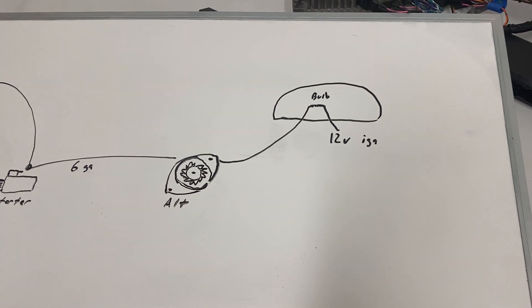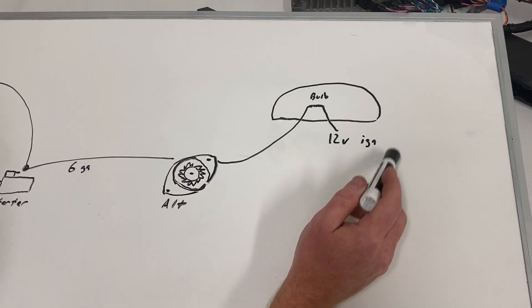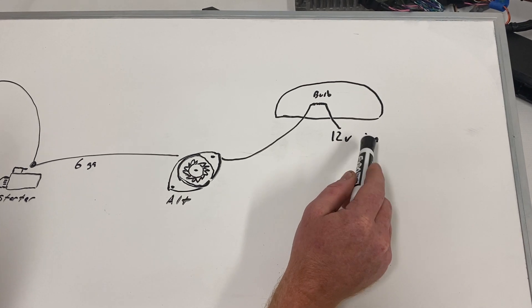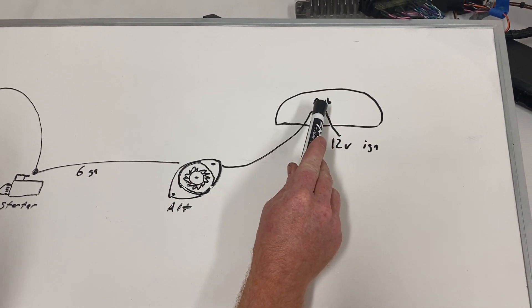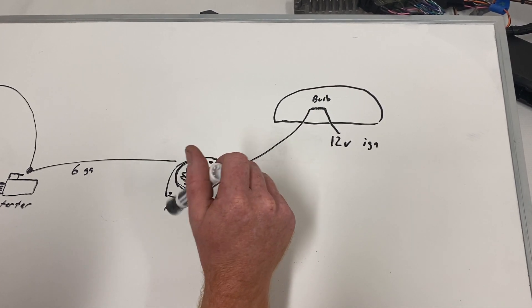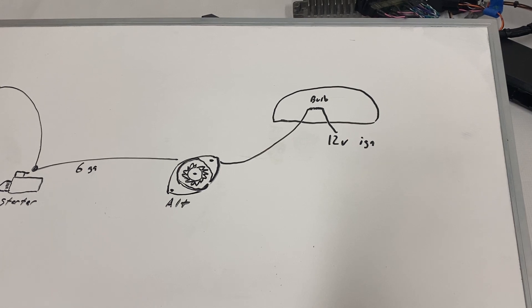So the way that the system works is you have 12 volts ignition power, so that's only with the key on. That travels through the bulb which creates a set amount of resistance and then goes to the alternator which excites the charging system in the alternator.